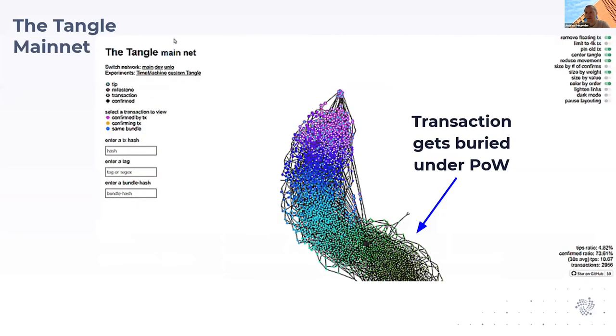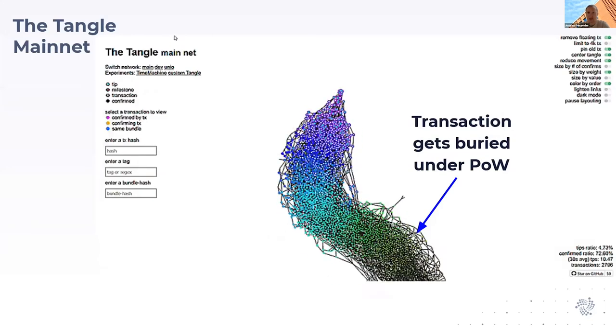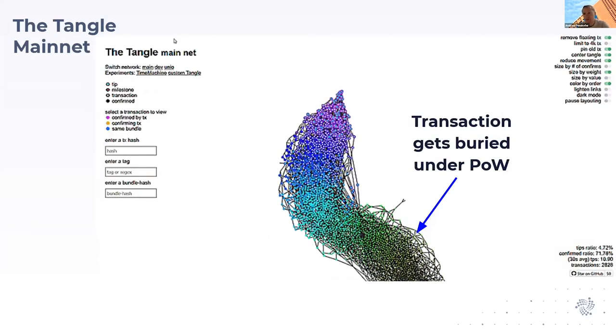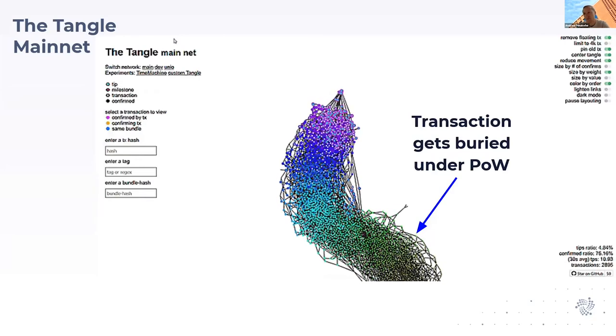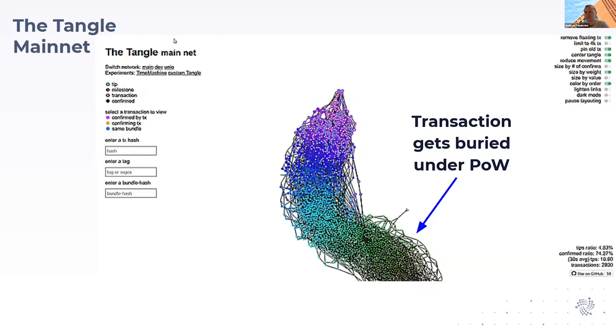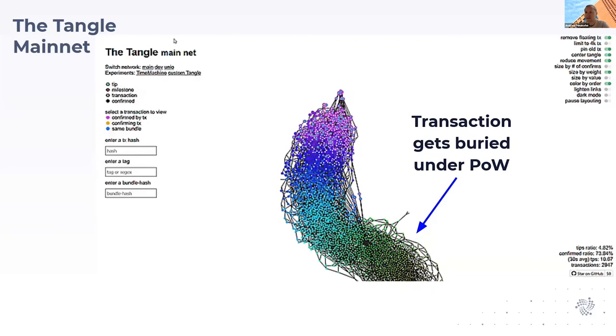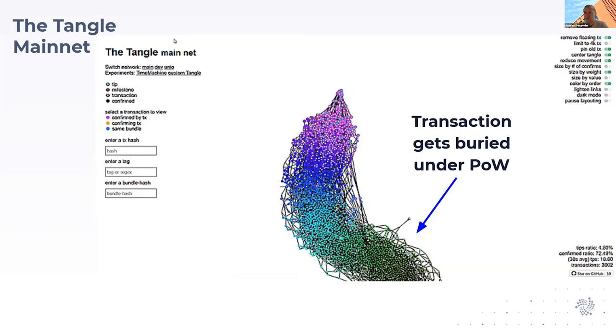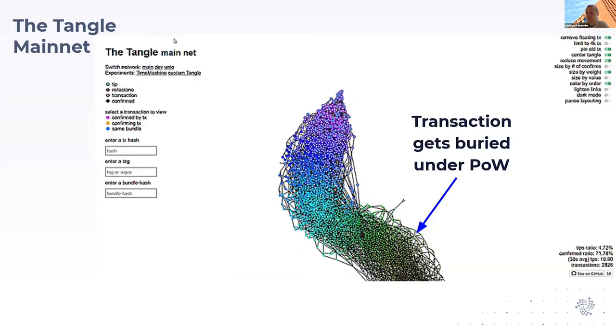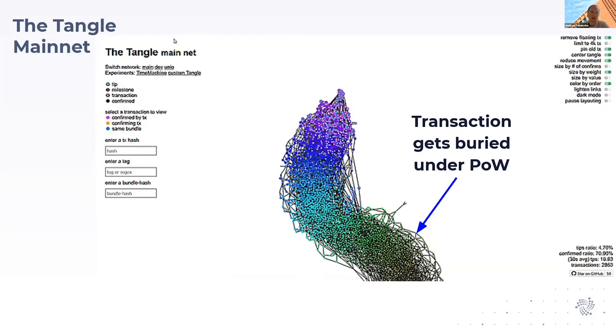Here's an animation of how this looks on the mainnet currently. You have incoming transactions on the top, and transactions that are further down don't get more approvers, but the weight pulled on top by the tips is increasingly pulled on top of them, and they get buried under the proof of work.